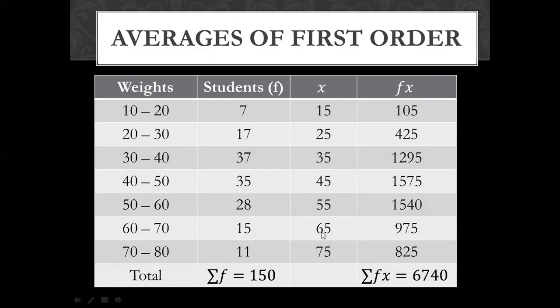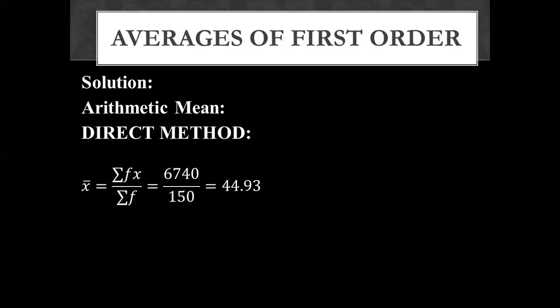That would be how much the x values are. Now, we need to solve fx. What will happen to fx? We need to multiply f by x. Let's multiply. 7 into 15, 17 into 25, 37 into 35, then 35 into 45, then 1575 remaining products. Now we will sum f and fx. The total of fx will get the total of fx. What do we do in our formula? 6,740 divided by 150 then the arithmetic mean will be 44.93.